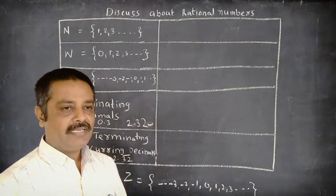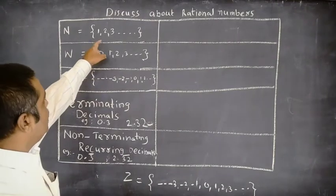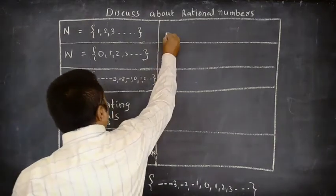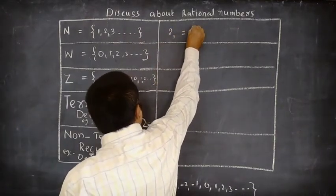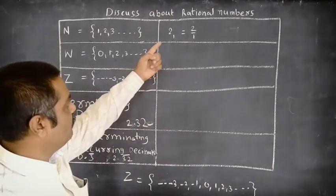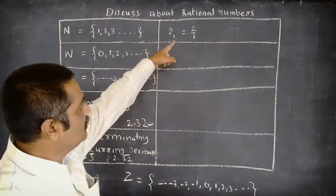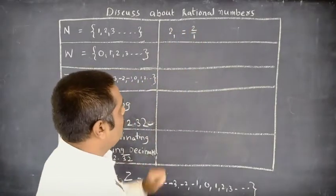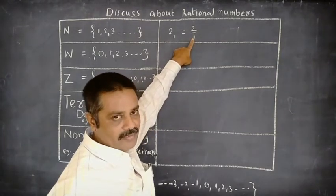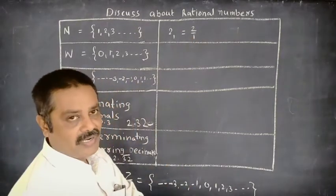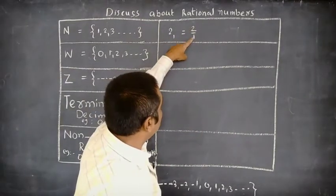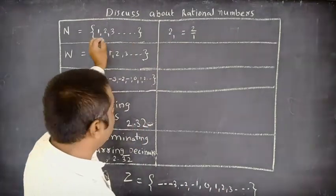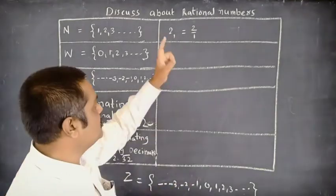Now we have to discuss which numbers are rational and which are not. Rational number means a number which can be written in the form P/Q where Q ≠ 0 and P, Q belong to Z, meaning integers. For example, taking the number 2 from natural numbers: 2 can be written as 2/1. It is in the form P/Q, the denominator is 1 (not 0), and both 2 and 1 are integers. So every natural number is a rational number.